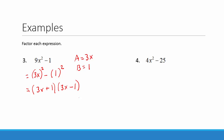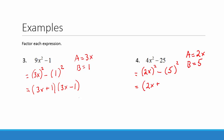In our next example, we rewrite it as a difference of squares by asking: what squared is 4x squared? Since 4 equals 2 squared and x squared equals x squared, we can rewrite 4x squared as the quantity 2x all squared. So a equals 2x and b equals 5, giving us the factored form 2x plus 5 times the quantity 2x minus 5.